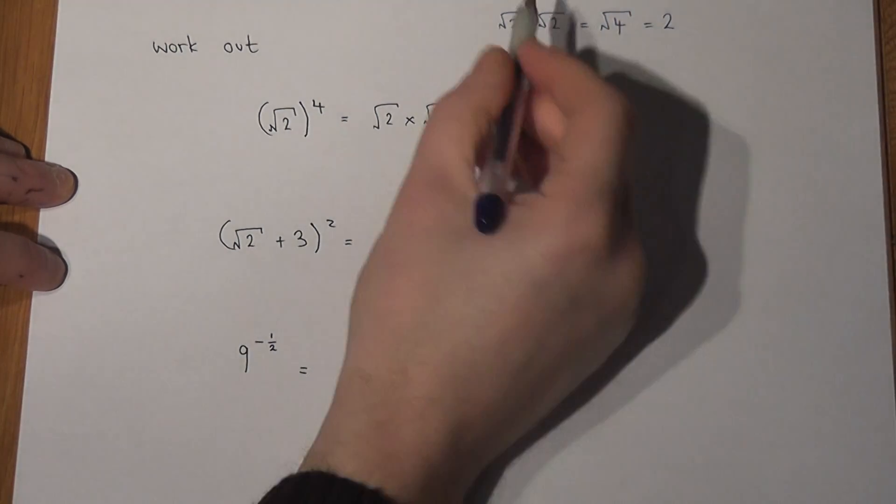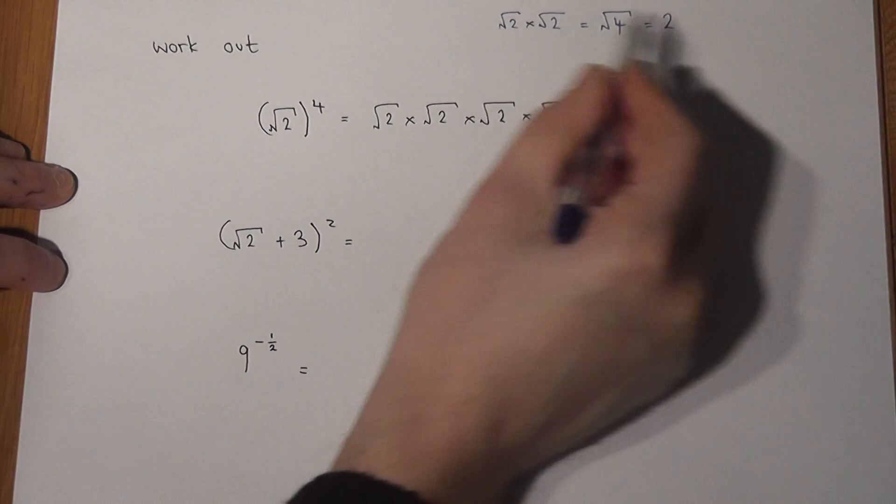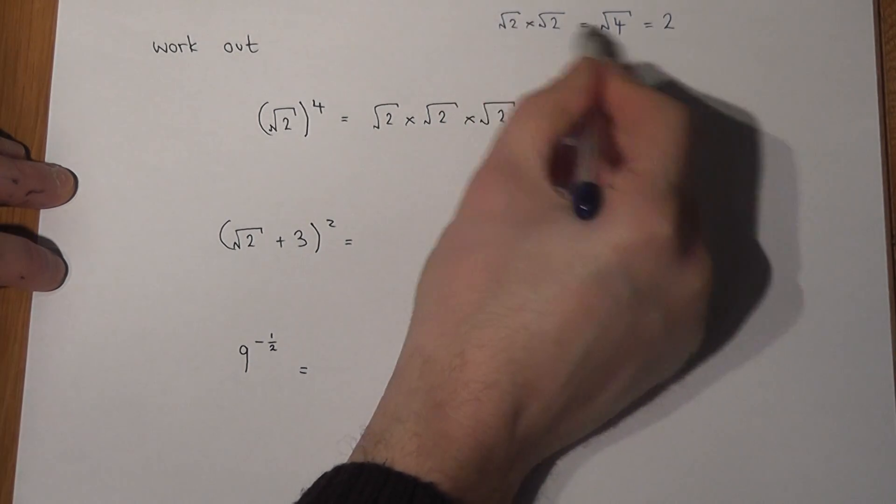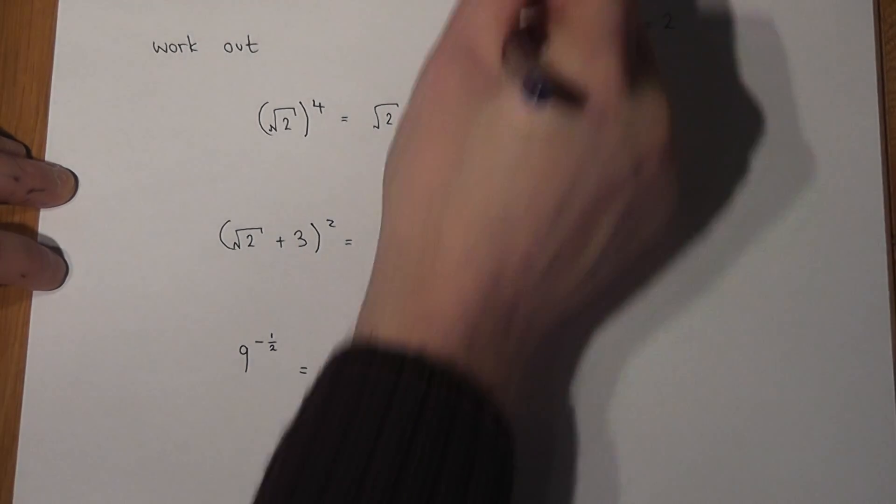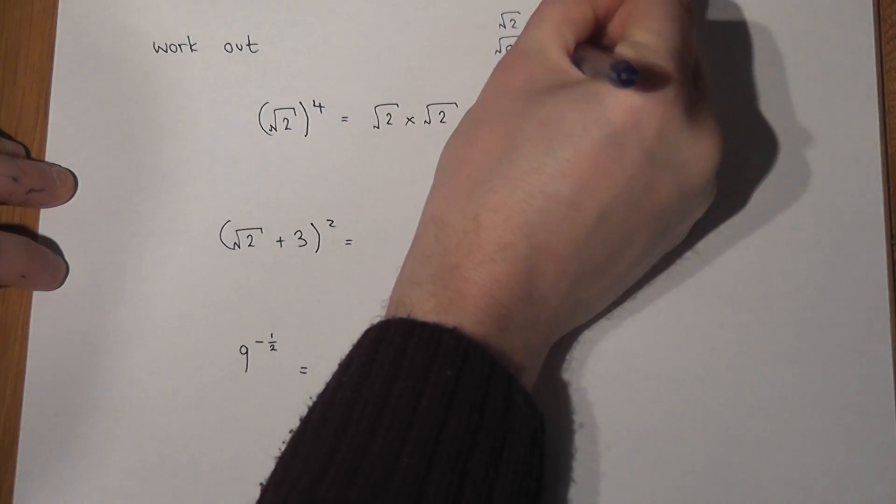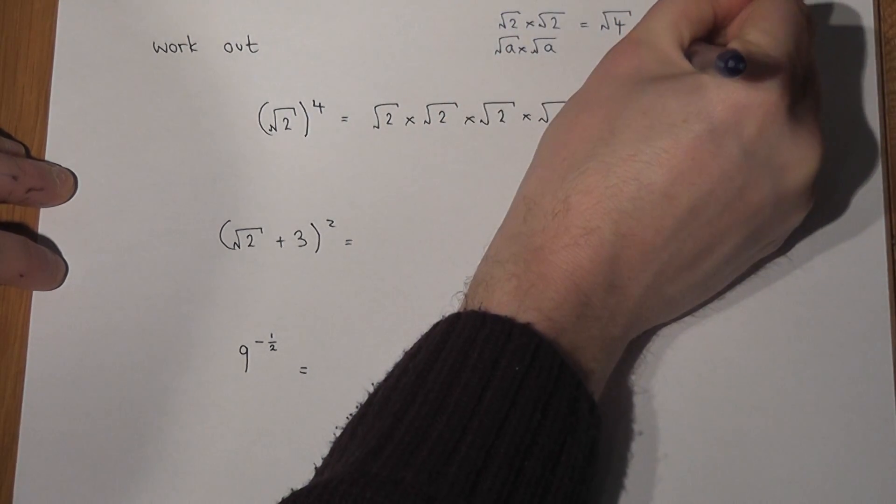So effectively, if you times together two surds that are the same, in a sense, the square root cancels. And more generally, root of A times root of A just equals A.